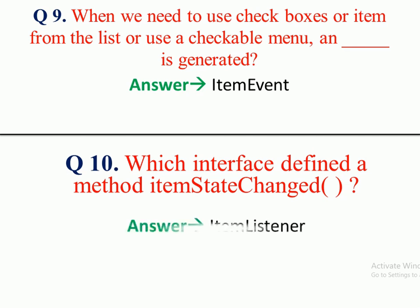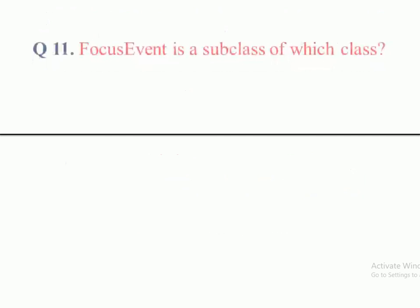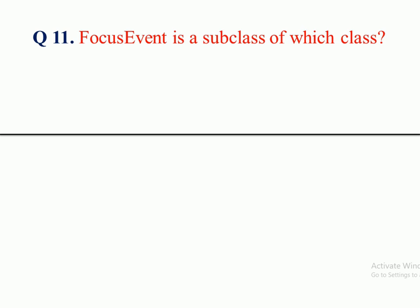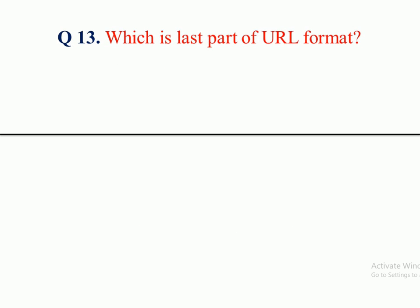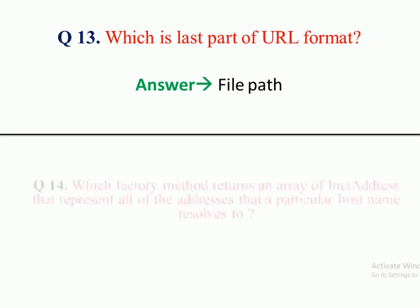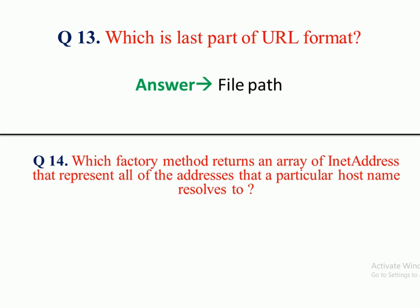Question 10: Which interface defines a method itemStateChanged? Answer: ItemListener. Question 11: FocusEvent is a subclass of which class? Answer: ComponentEvent class. Question 12: Which class is used for accessing the attributes of a remote resource? Answer: URL class. Question 13: Which is the last part of URL format? Answer: File path. Question 14: Which factory method returns an array of InetAddress representing all the addresses that a particular host name resolves to? Answer: getAllByName method.